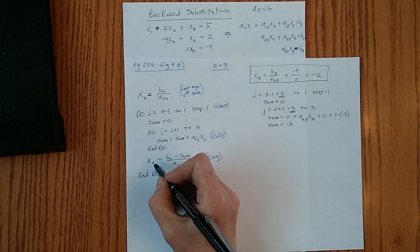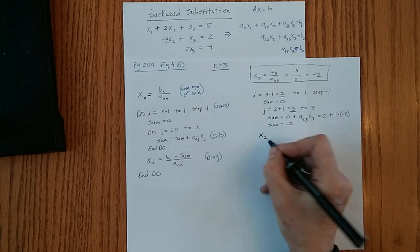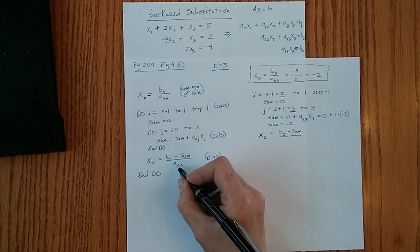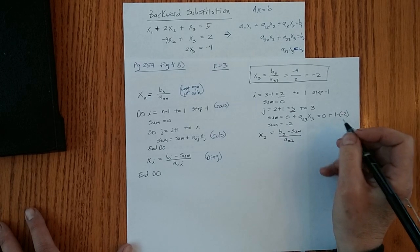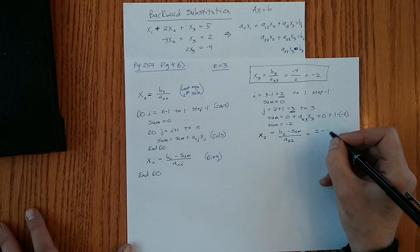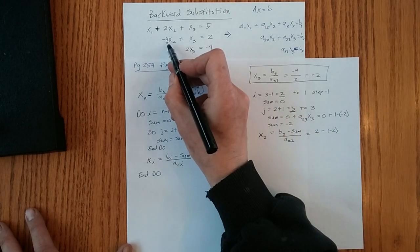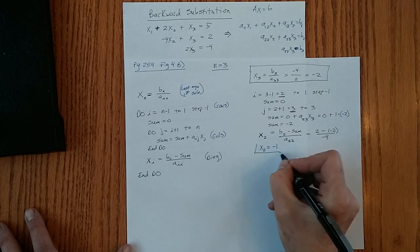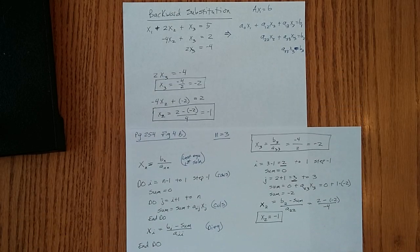Now we pop out and we do this diagonal term. x sub i, we're at 2, equals b sub 2 minus sum over the diagonal term a22. So that is b sub 2, minus sum we have minus 2, and a sub 2,2 right there is minus 4. So x sub 2 equals minus 1. So that's our second solution for our system of equations, just like by hand.